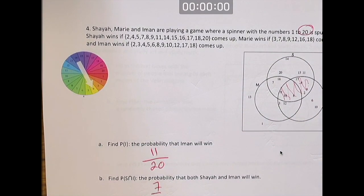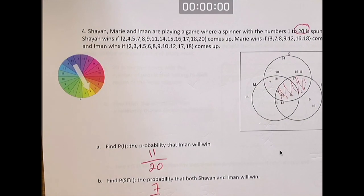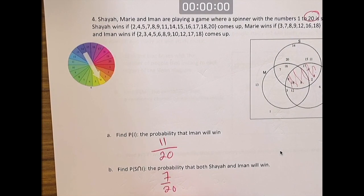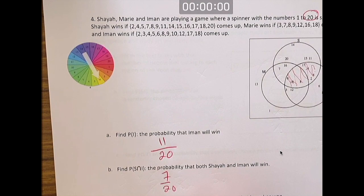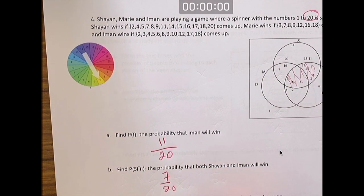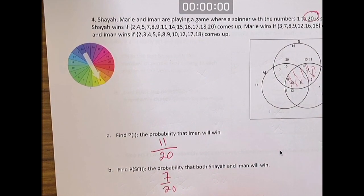What's the probability that Shea will win given that Iman won? I'm going to do the formula first. The probability of S given I is equal to the probability of S and I divided by the probability of I.